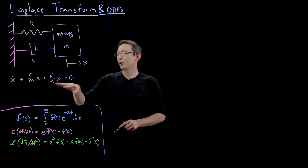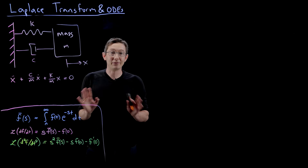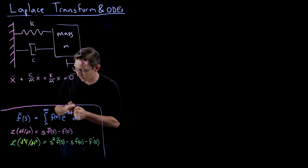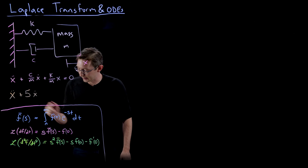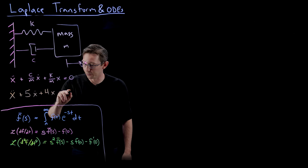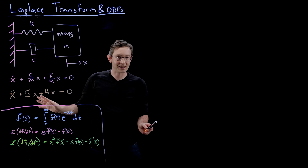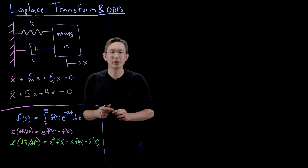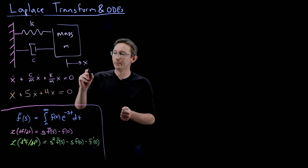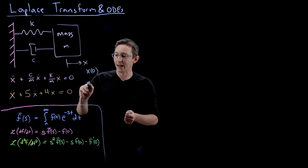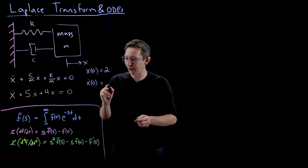For simplicity, I'll assume C, K, and M are positive integers. So my actual differential equation is X double-dot plus 5X-dot plus 4X equals zero, meaning mass M equals 1, C equals 5, and K equals 4. I also need initial conditions to solve the system. I'll assume X at time zero equals 2 and X-dot at time zero equals minus 5.